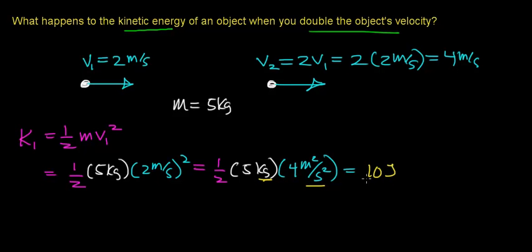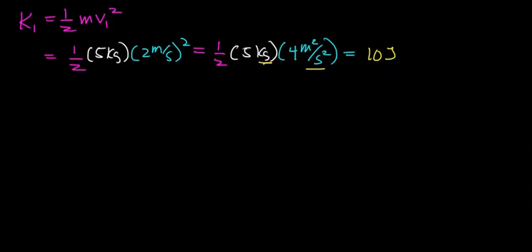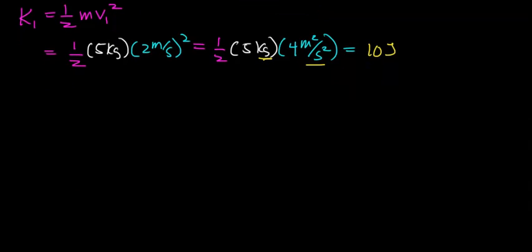Just recall that 1 joule is the energy required to apply a force of 1 newton over a distance of 1 meter. Now let's figure out what the kinetic energy of this object is when we double the object's velocity. We'll call this K2, for when we double the velocity of the object. This will work out to be one half the mass of the object times V2, the doubled velocity, squared.